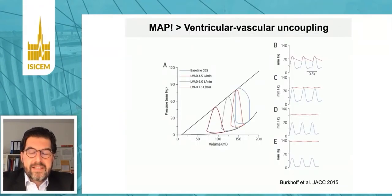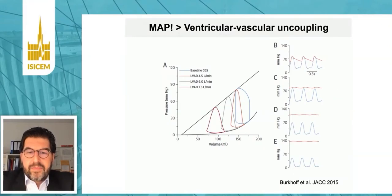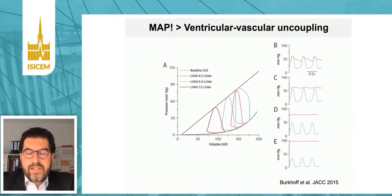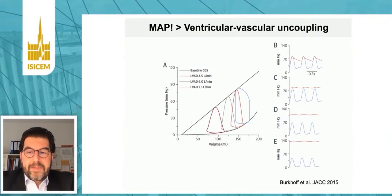This is nicely reflected by a manuscript from 2015 from Dan Berkow and colleagues, where the authors demonstrated that depending on the flow — in this example by an impeller device — ventricular-vascular uncoupling occurs and the aortic pulse wave is dampened. That tells us that pulse contour analysis, for example by the PiCCO system, is not reliable in those complex patients to estimate hemodynamic changes introduced by MCS and the underlying condition.